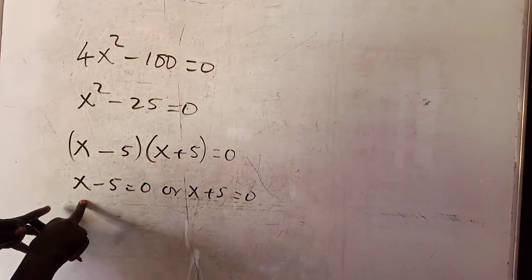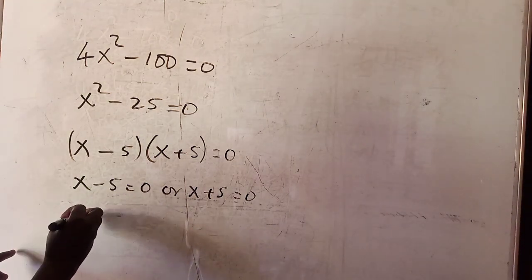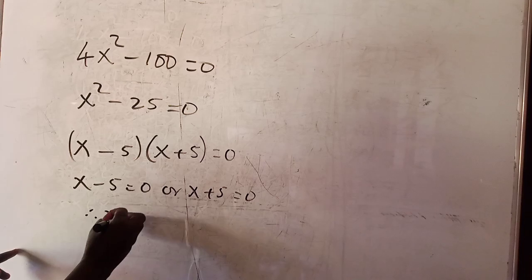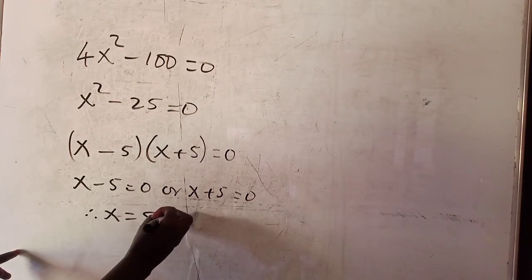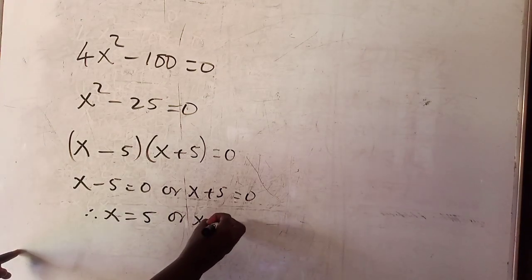From the first equation, x - 5 = 0, therefore x = 5. From the second, x = -5.